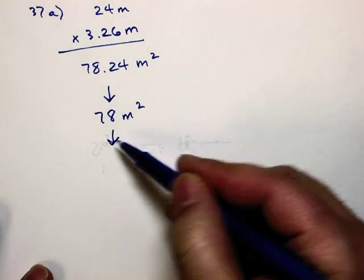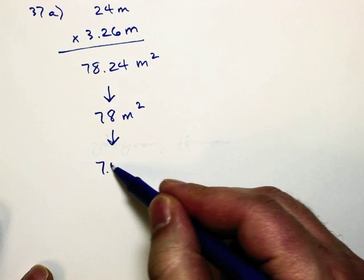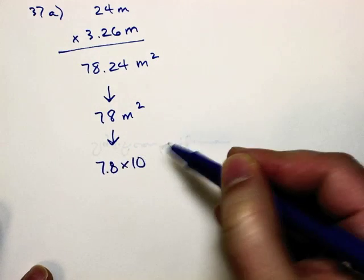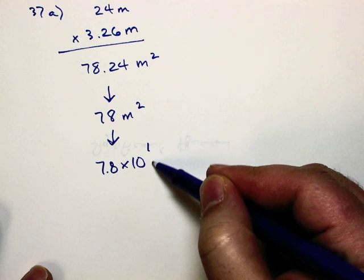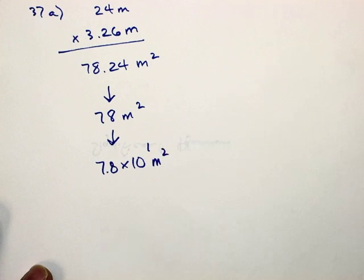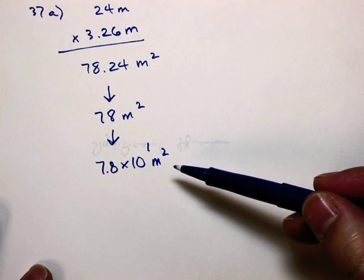We've got to do one final step, which is change into scientific notation. How do we do that? Seven point eight times 10 to the? First. First. Good. And this is how it would be on the paper.